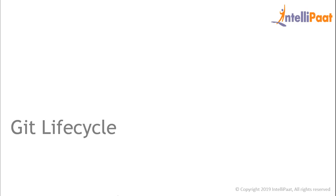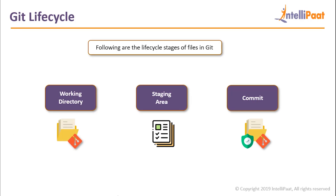Welcome back to the session. In this session we are going to learn about the Git lifecycle and how it works. In Git, any file goes through the following stages: the file first exists in the working directory. Once you finalize the file, we start to stage it using the git add command. It then gets staged in the staging area, and the final stage is committing the file to the Git file system.